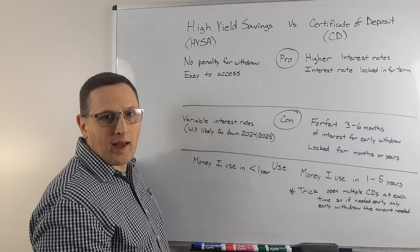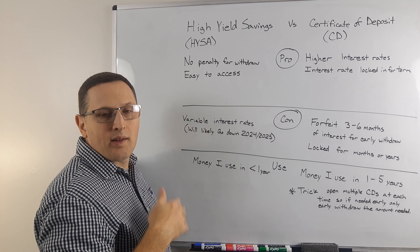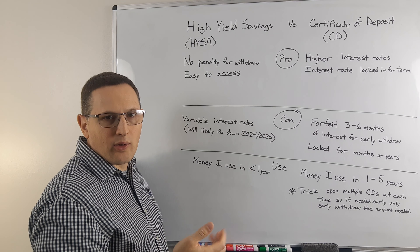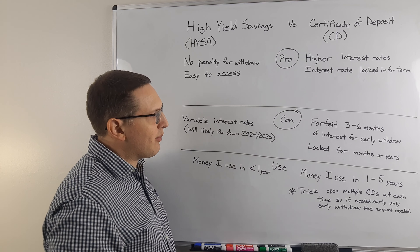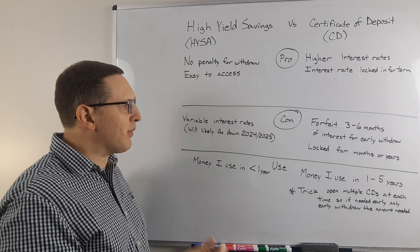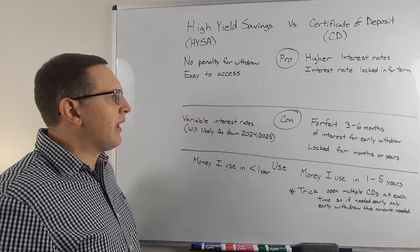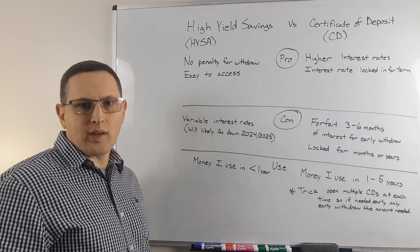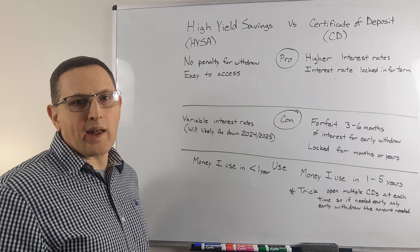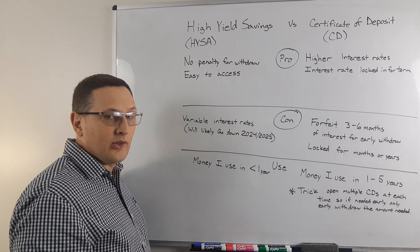If you wait until the CD matures and you cash it at maturity, then that's fine — you get all the money, you don't have to forfeit any of the interest. The other con with the CD is you've effectively locked up that money for that many months or years unless you're willing to forfeit whatever that interest is.